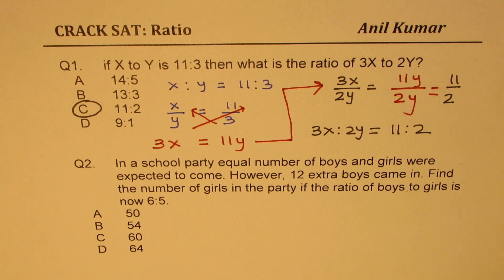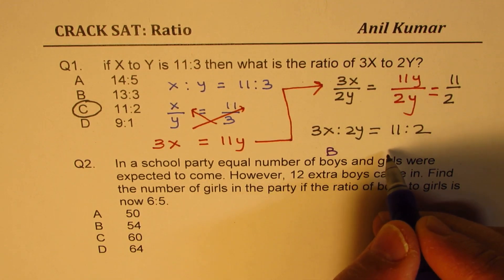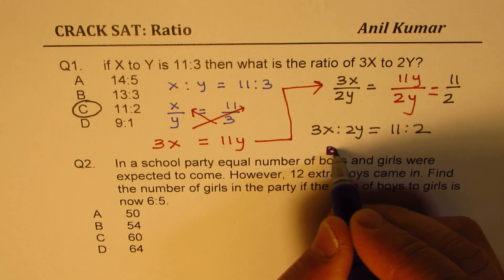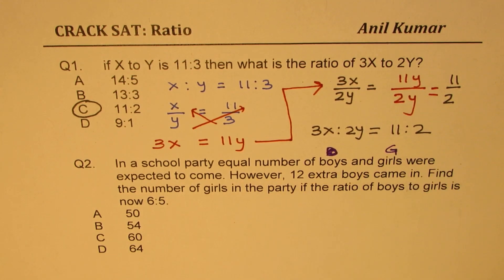In a school party, equal number of boys and girls were expected to come. So let's call this number as B, right? I should have called because the girls are same, right? So let's say G is the number of girls, okay?